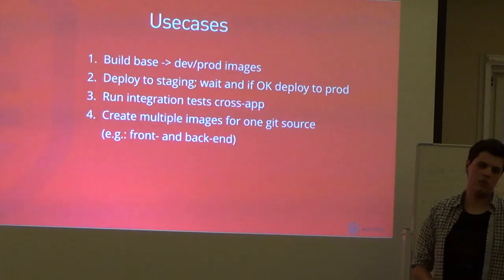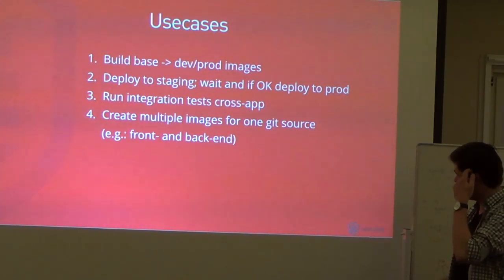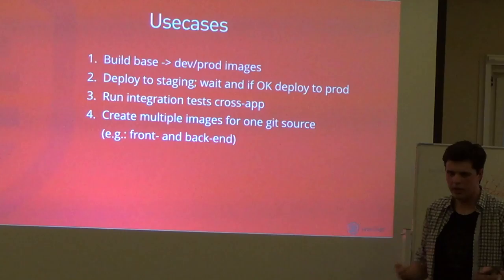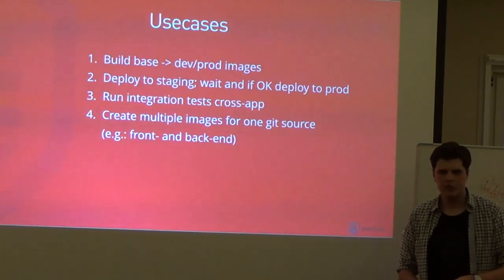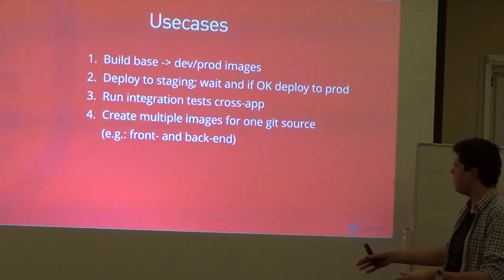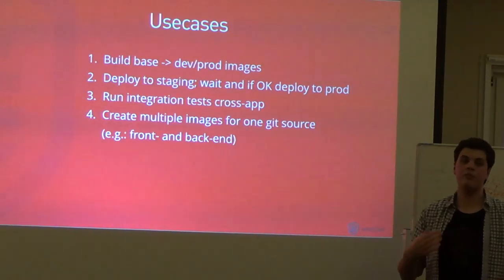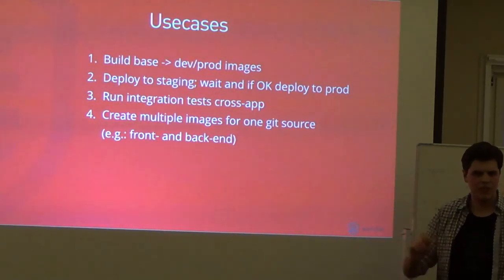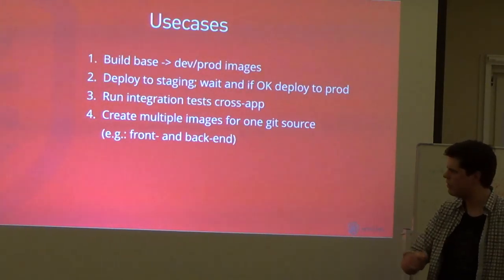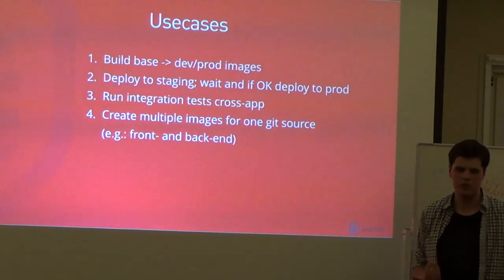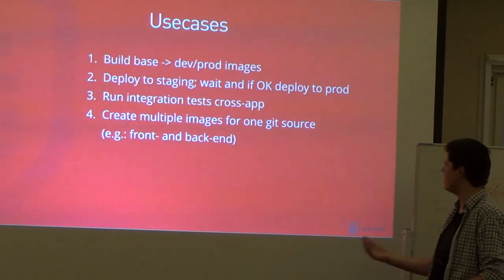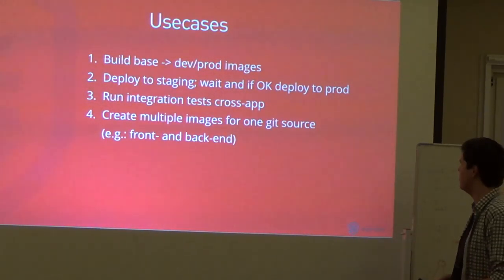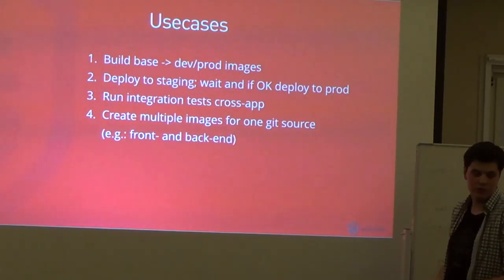The second use case is interesting. There was a user I talked to who basically wanted to deploy his applications to staging - that's one pipeline. But then another pipeline would ping that staging server after 10 minutes: is everything working? He'd do an API call, and if it returned okay, everything's fine - after 10 minutes, he wanted to then deploy to production. That seems like an interesting use case.